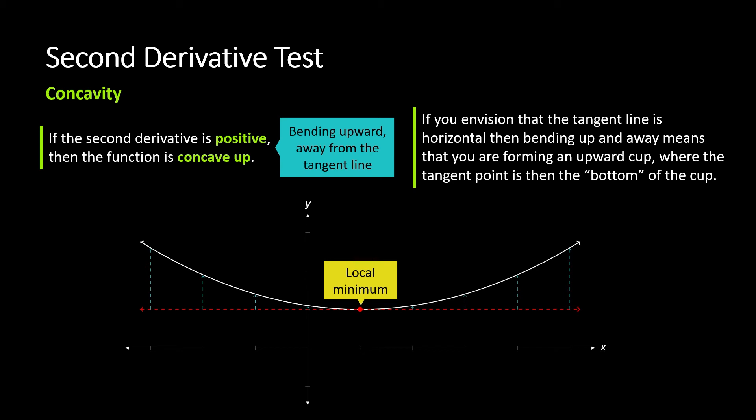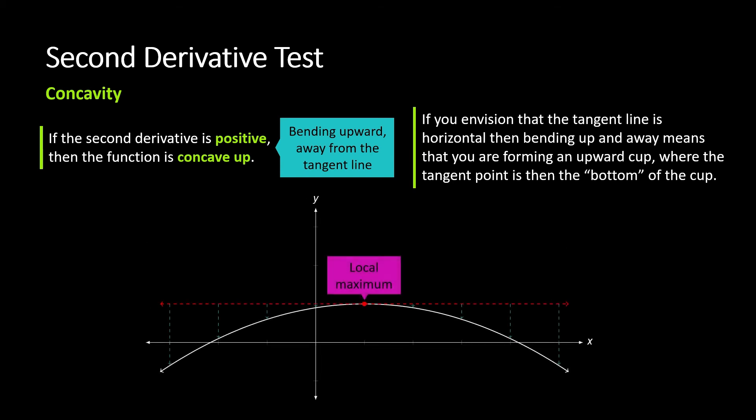Similarly, if the second derivative were negative, that would give us a concave down situation. We would have this tangent line, the concave down means it's pulling down, and so a negative would give you a local maximum. So the concavity is what's driving the second derivative test.